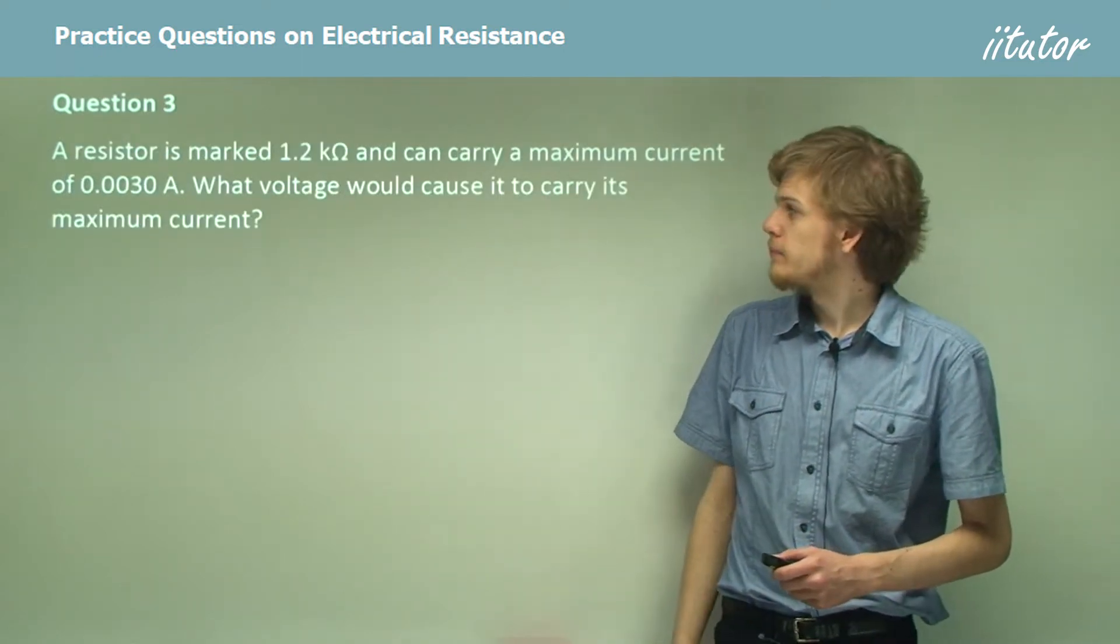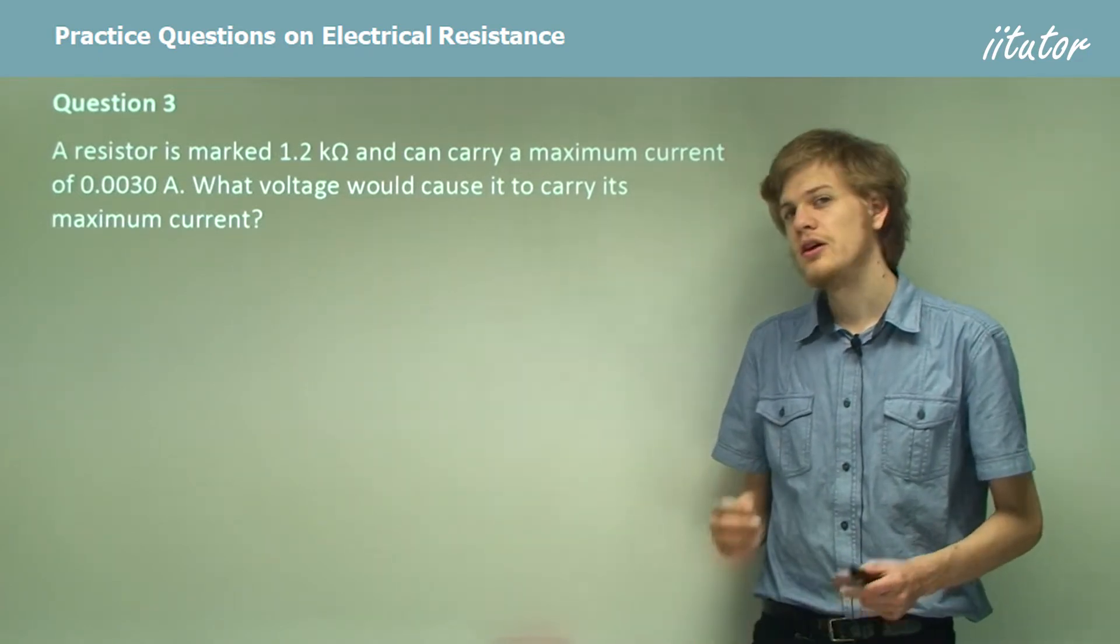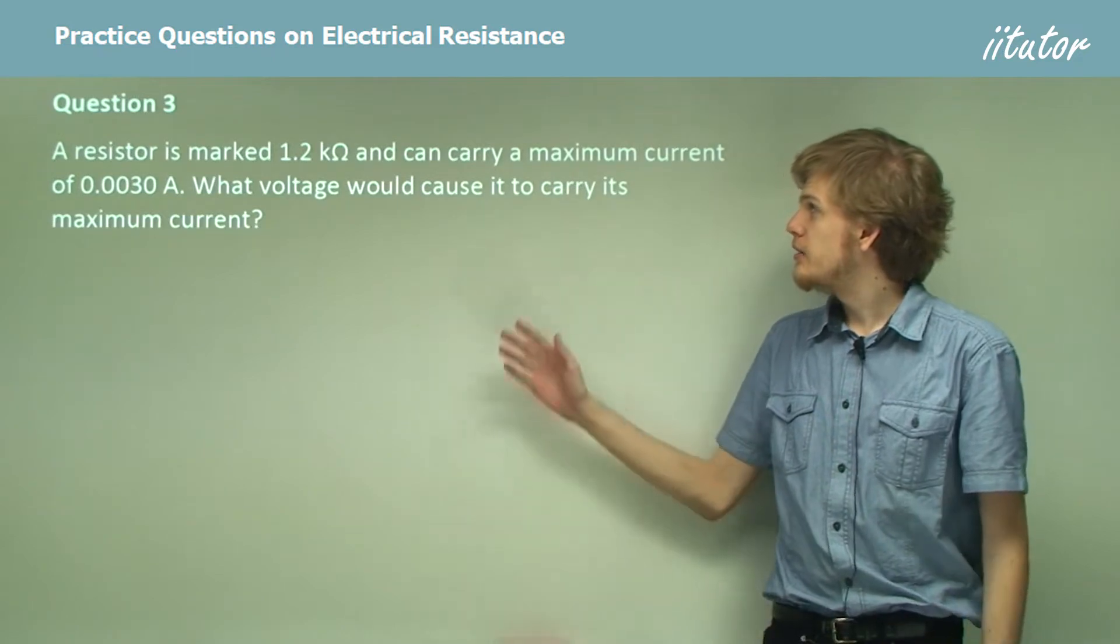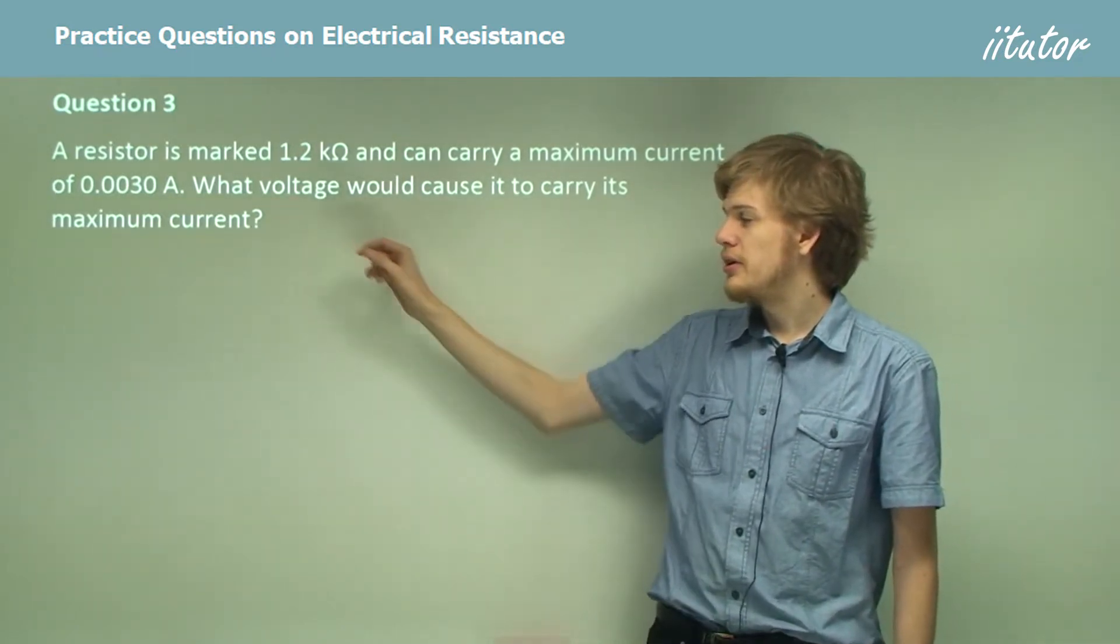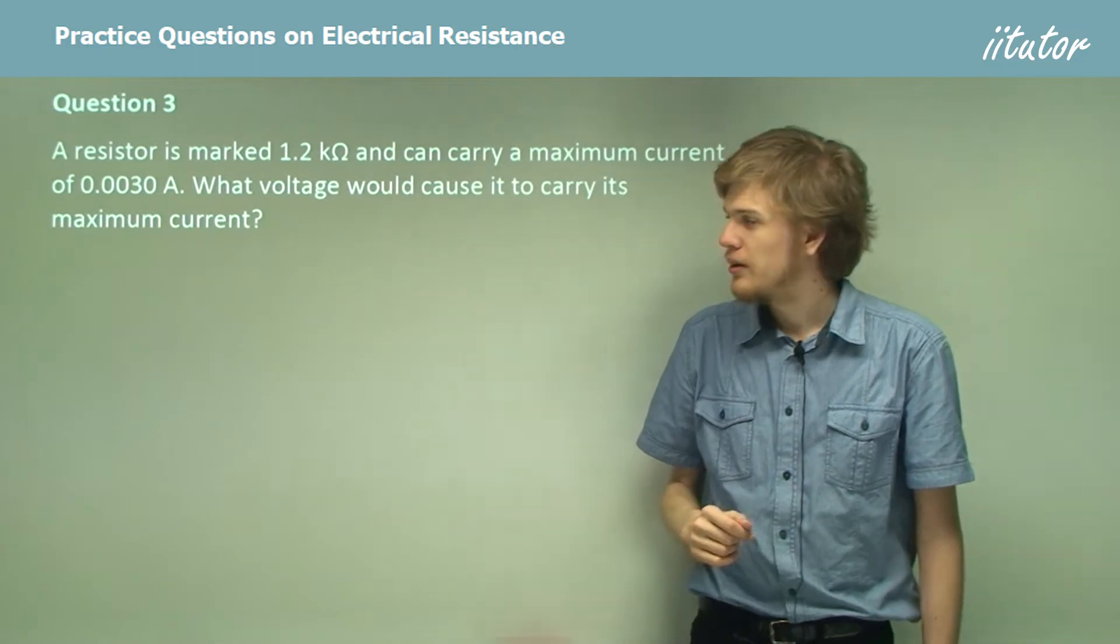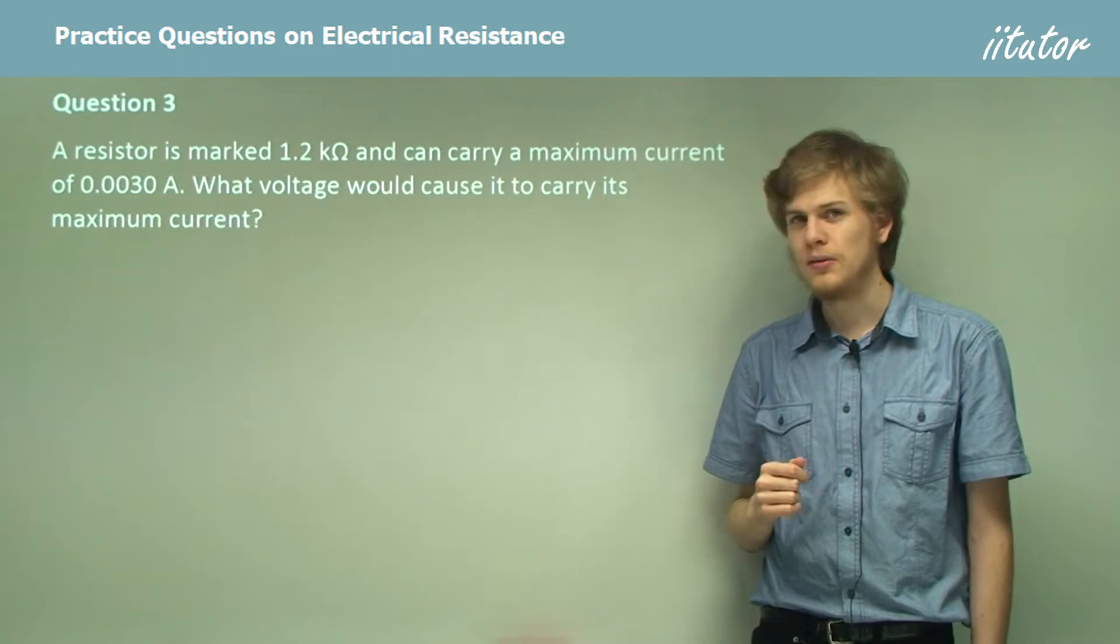Question 3. A resistor is marked 1.2 kilo ohms, that is 1,200 ohms, and can carry a maximum current of 0.003 amps. That's 3 milliamps. What voltage would cause it to carry its maximum current?